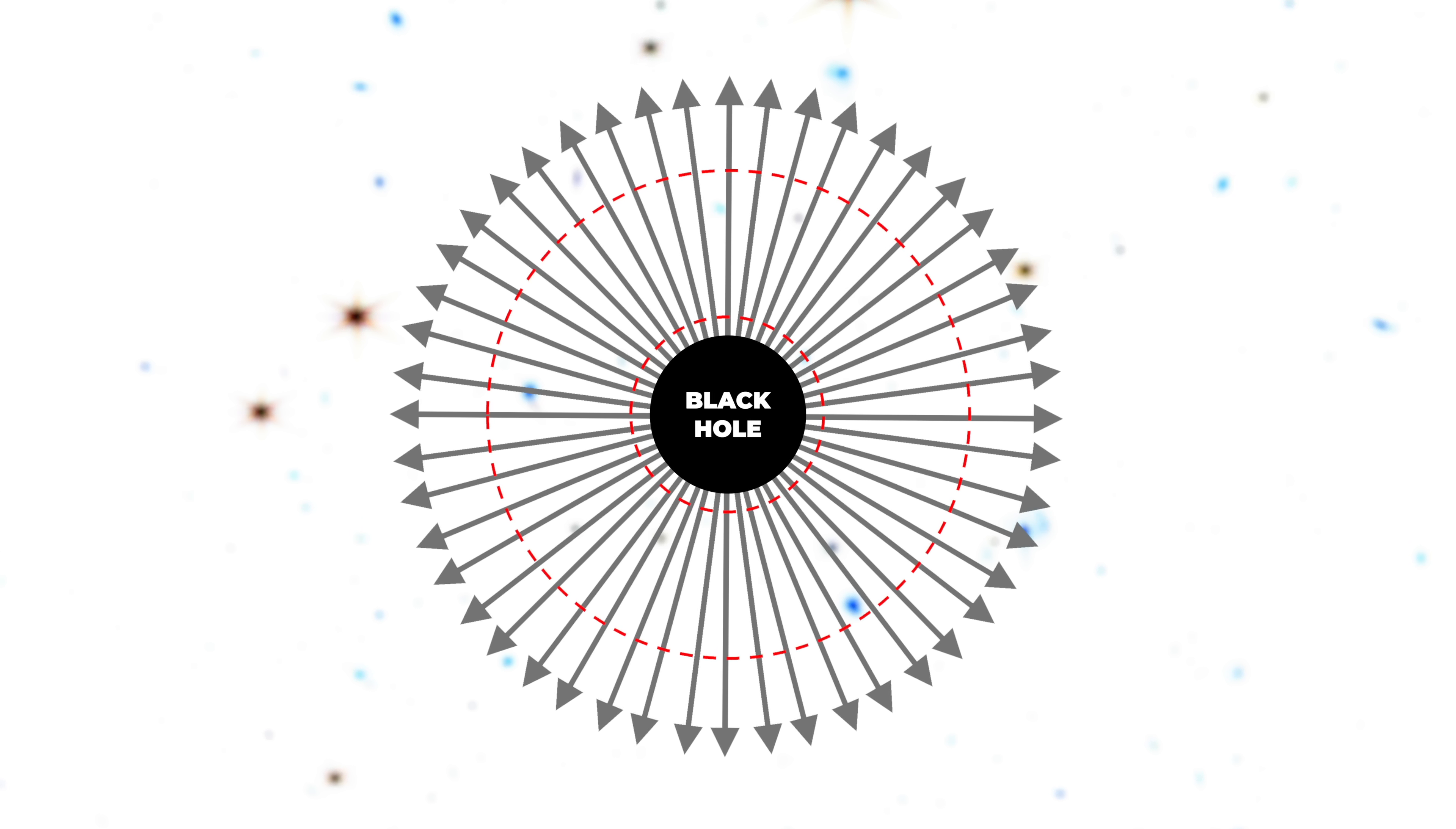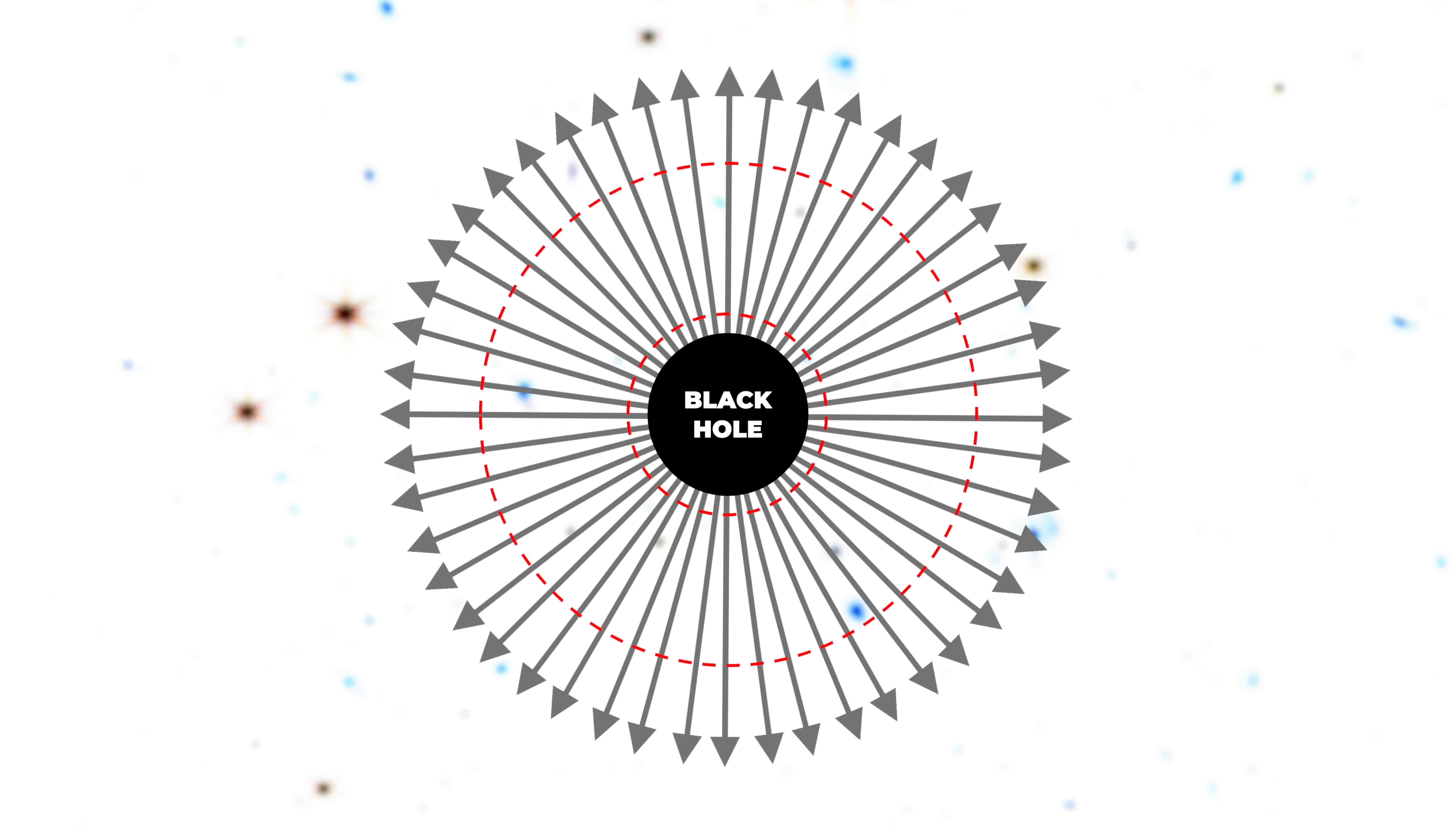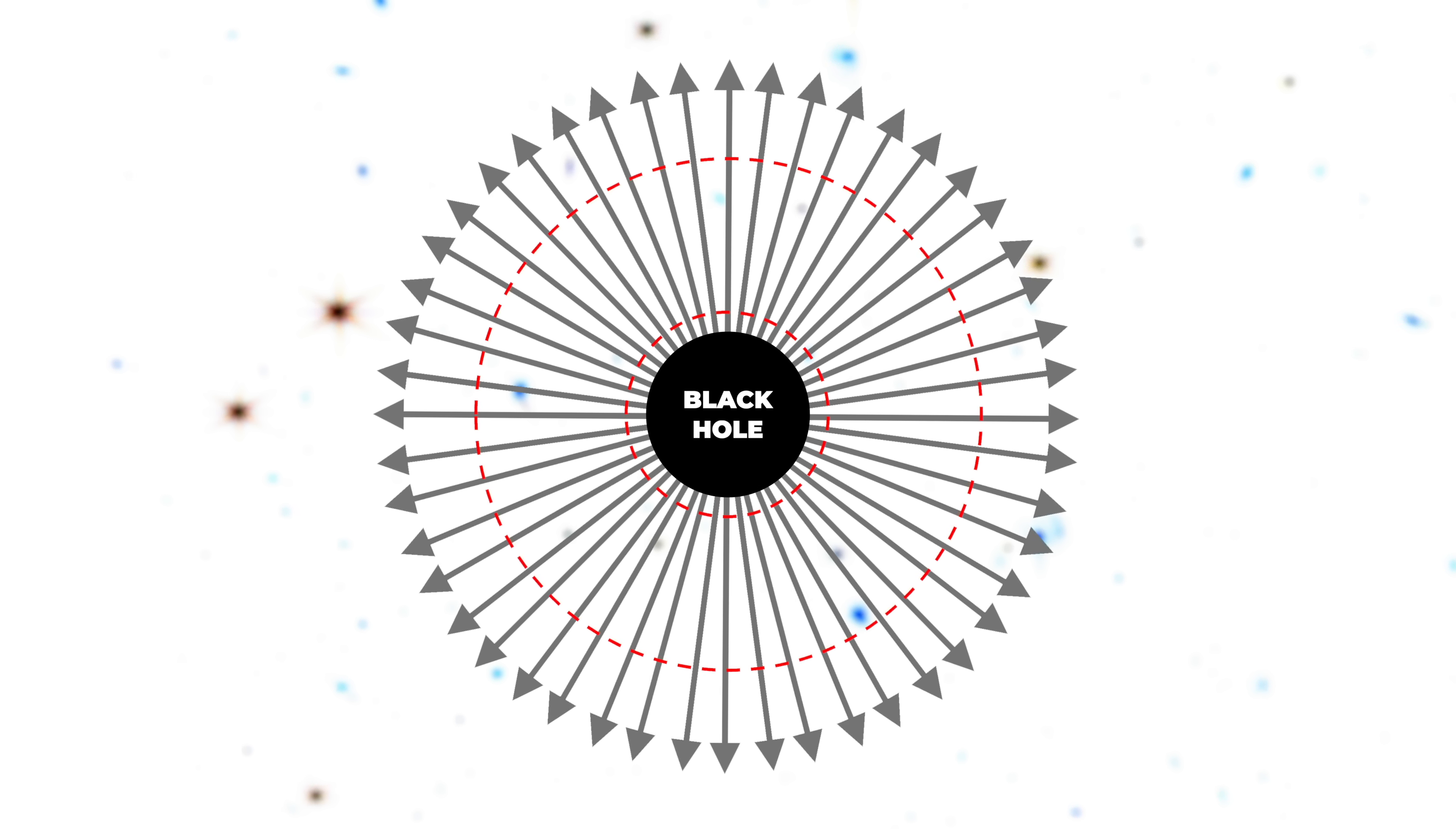These red circles kind of drive the point home. The same number of lines go through both circles, but the smaller circle is closer to the center of the black hole with more closely packed lines and stronger gravity.